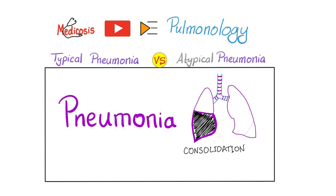Streptococcus pneumoniae is going to cause typical pneumonia — with sudden, severe, high-grade fever, and a cough that is productive of rusty-colored sputum tinged with blood.